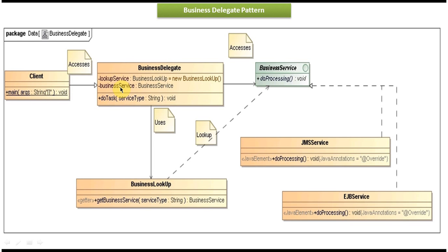The client just accesses the business delegate object. If the client wants to access the JMS business service object's do processing method, the client calls the do task method by passing JMS. Then the business delegate calls the get business service method of the business lookup by passing JMS. This lookup returns the JMS business service object to the do task method, and then the business delegate invokes the do processing method of the JMS business service object.